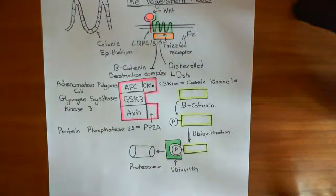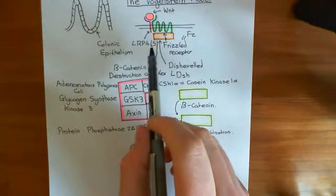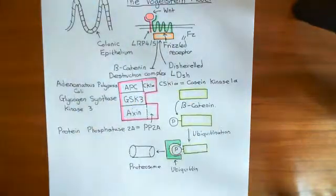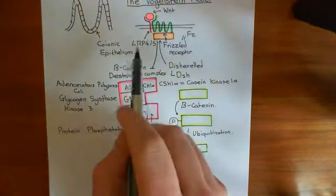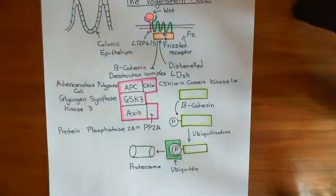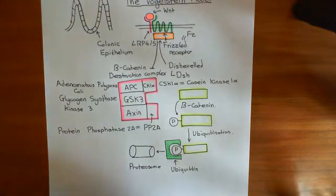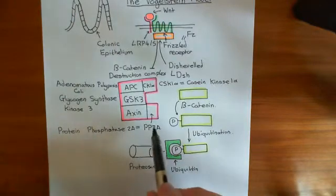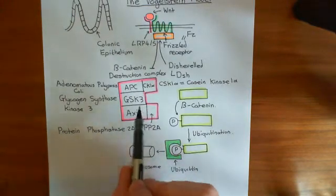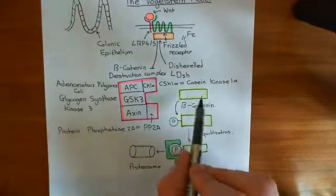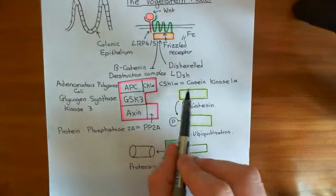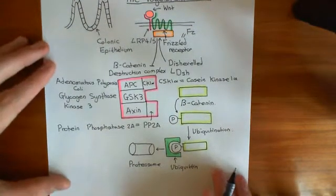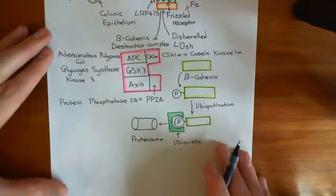So the dishevelled protein, when it's activated by Wnt binding to the frizzled receptor and also the LRP4-5 receptor, is going to inactivate the beta-catenin destruction complex. And when the beta-catenin destruction complex is inactivated, beta-catenin levels within the cytoplasm of the cell are going to go up.